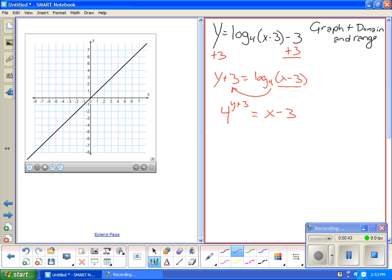And then you get x by itself by adding 3 to both sides. So 4 to the y plus 3, plus 3 equals x. So then x equals 4 to the y plus 3, plus 3. So that's an x.